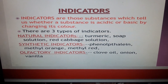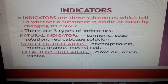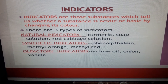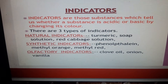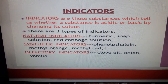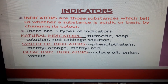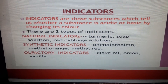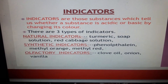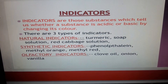Natural indicators are obtained from natural things, like turmeric, soap solution, red cabbage solution, china rose solution, litmus solution, etc. Synthetic indicators are those which are prepared artificially, like phenolphthalein, methyl orange, and methyl red. Olfactory indicators include clove oil, onion, and vanilla. These can also be classified under natural indicators.